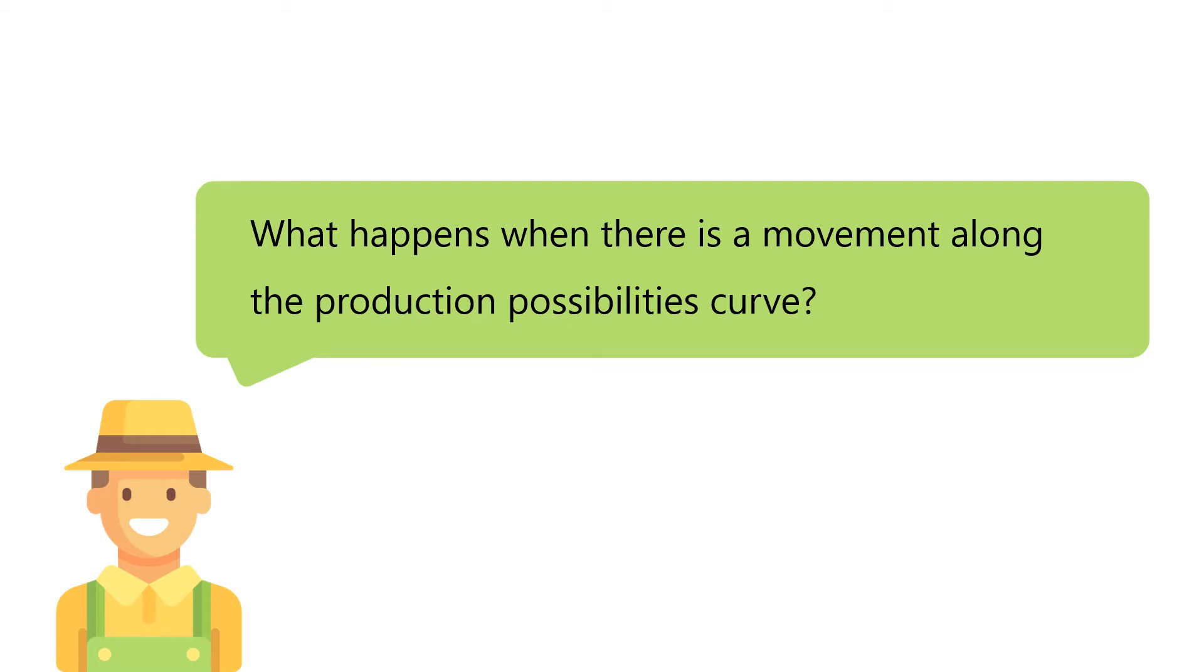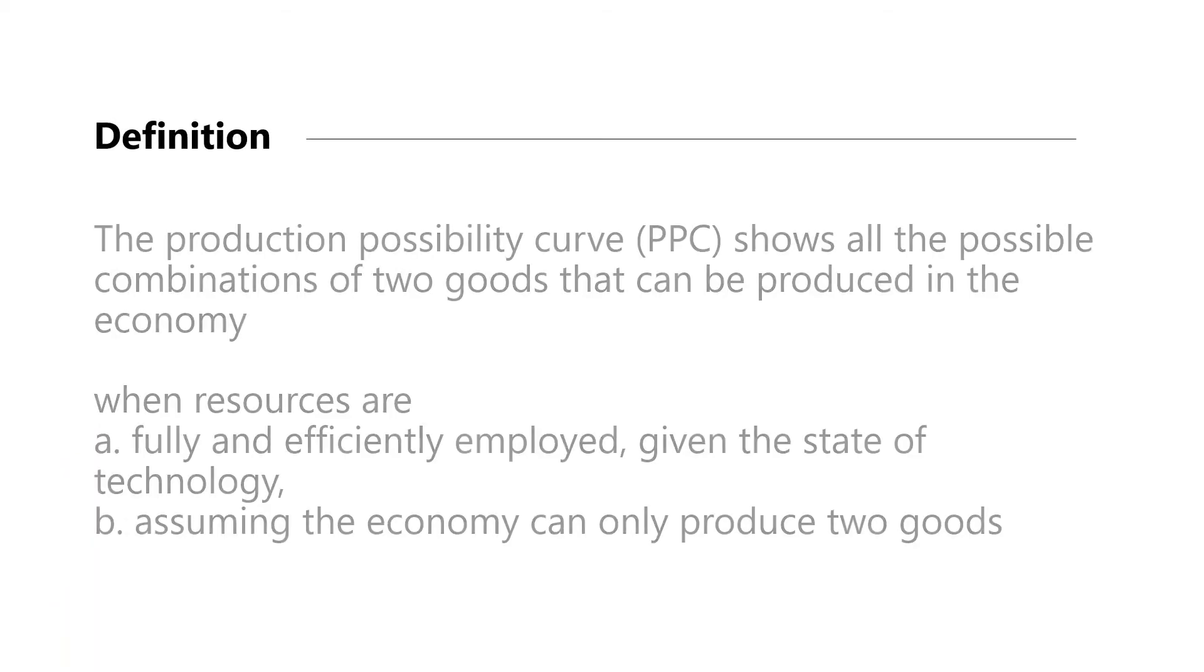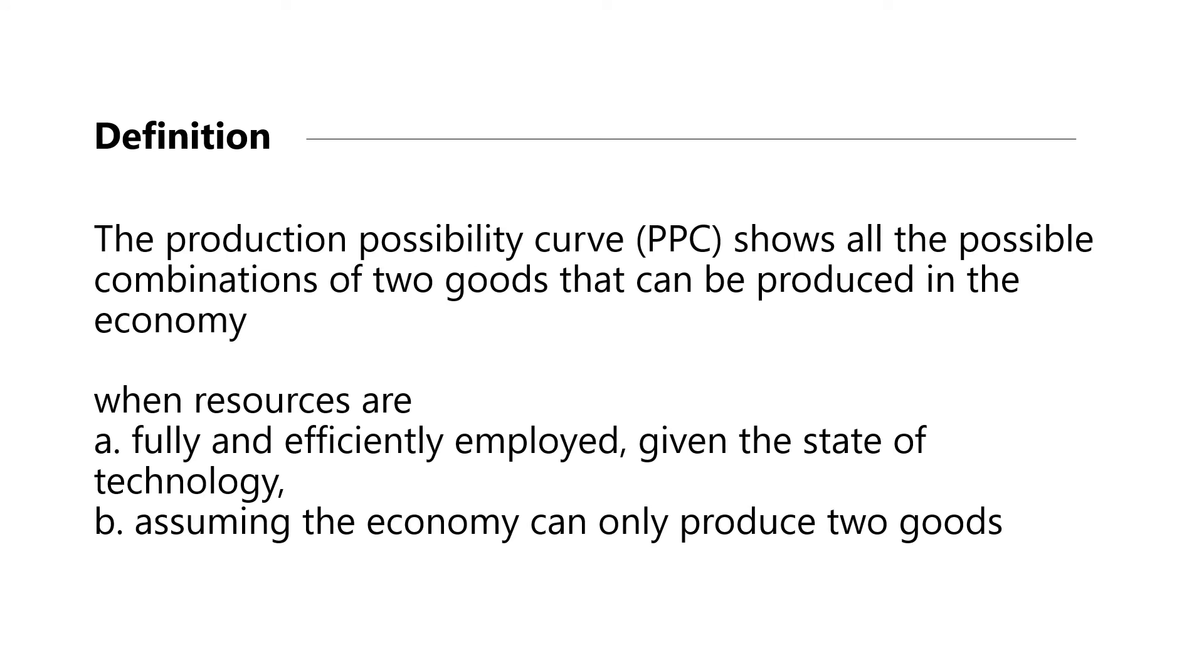Let's recap on the definition of the Production Possibilities Curve. The Production Possibilities Curve shows all the possible combinations of two goods that can be produced in the economy when resources are fully and efficiently employed, given the state of technology, assuming the economy can only produce the two goods.